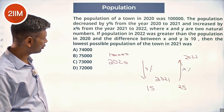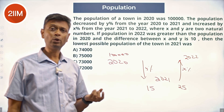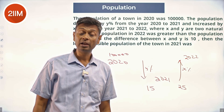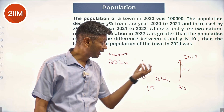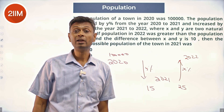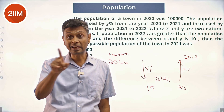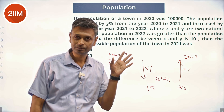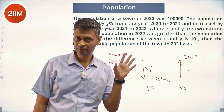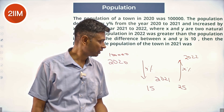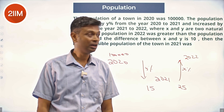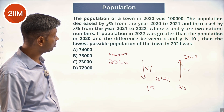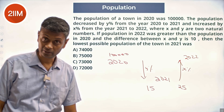We are solving for 100,000 into (1 minus y by 100) into (1 plus x by 100) to be greater than 100,000. So (1 minus y/100) into (1 plus x/100) should be greater than 1. We know additionally the difference between x and y is 10.